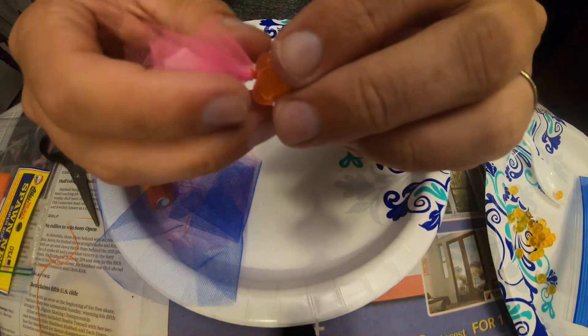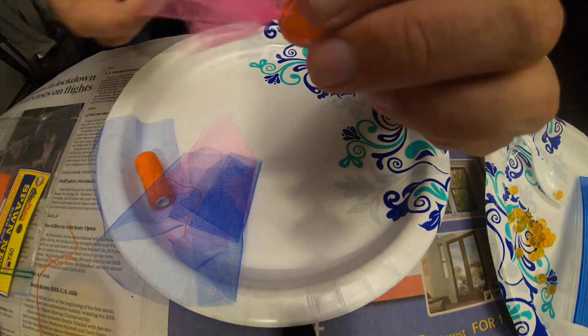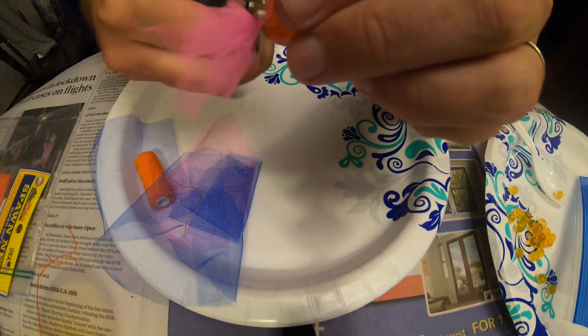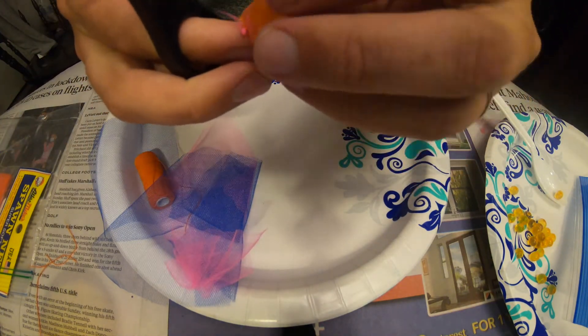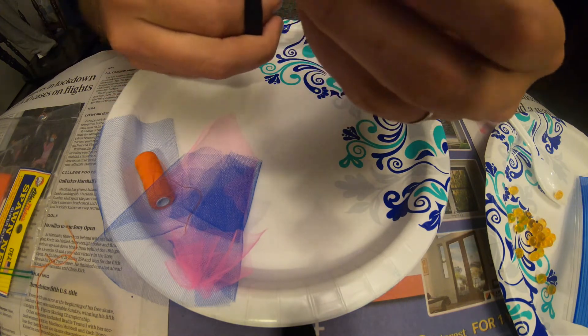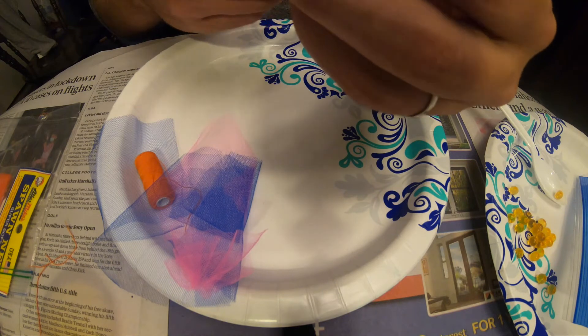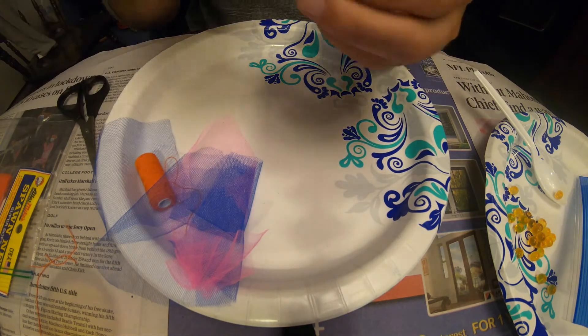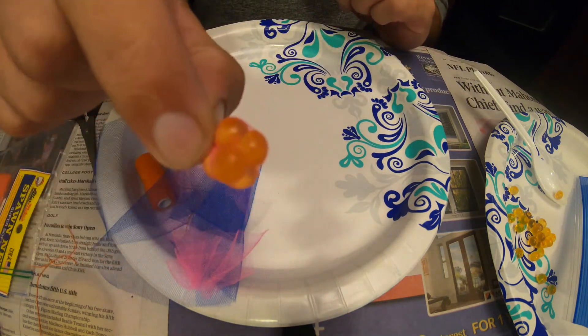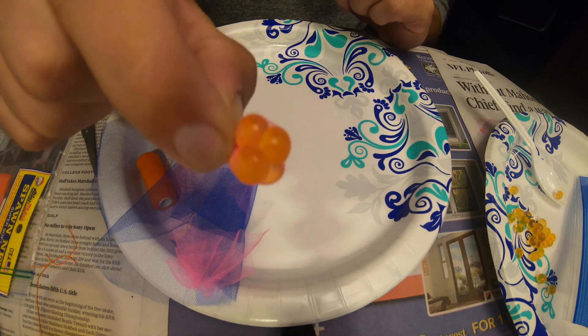So we're gonna go ahead and clip off that extra material there. Any wispies we have residual, we're gonna clip that off as well. And there we go guys, that's a beautiful bag and we're gonna hope to catch some steelhead on that.